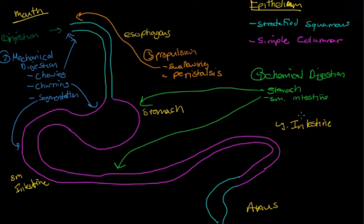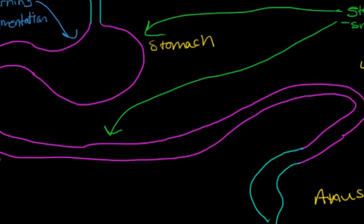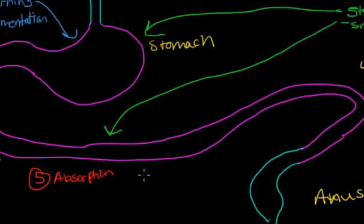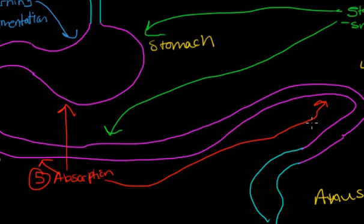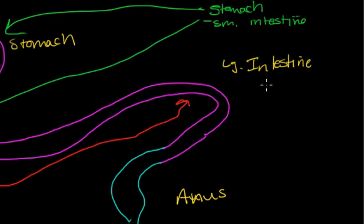Then we have absorption — step five. That's going to take place wherever there's simple columnar epithelium: your stomach, your small intestine, and your large intestine. The large intestine is going to be mostly water absorption — mostly water reclamation.